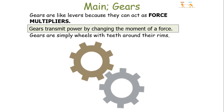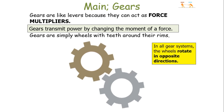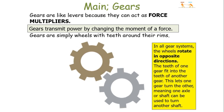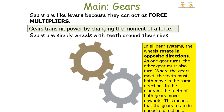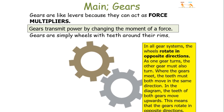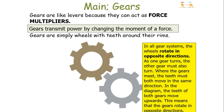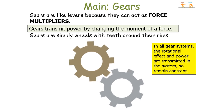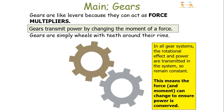Gears are simply wheels with teeth located around their rims. In all gear systems, the wheels rotate in opposite directions, because the teeth of one gear fit into the teeth of another gear. This lets one gear turn the other, meaning the axle or shaft can be used to turn another shaft. As one gear turns, the other must also turn, and where the gears meet, the teeth must move in the same direction. In all gear systems, the rotational effect and the power are transmitted in the system, so they must remain constant.